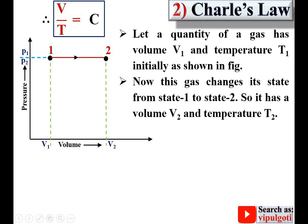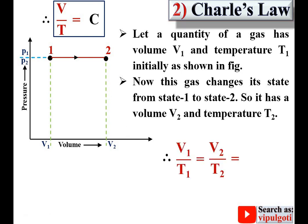For state 1: V1 divided by T1 equals constant. For state 2: V2 divided by T2 equals constant. Therefore V1 over T1 equals V2 over T2 equals constant. This means we can write the same ratio for each and every state, but the condition is that pressure remains constant. This is a very important relation.